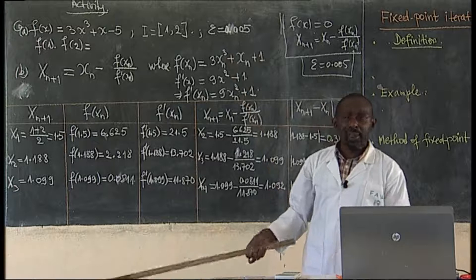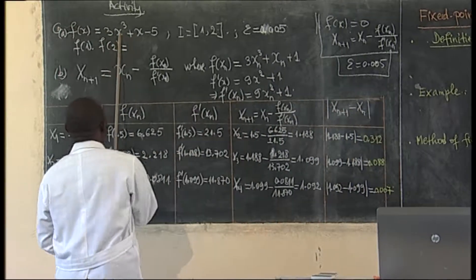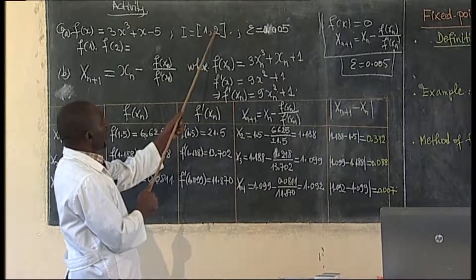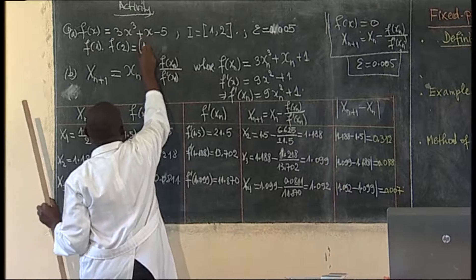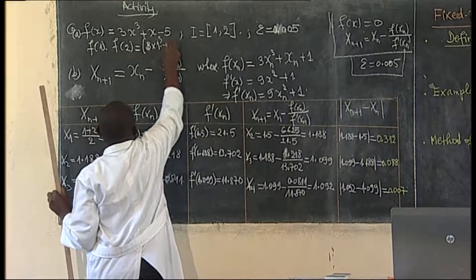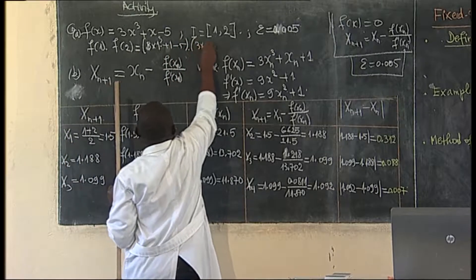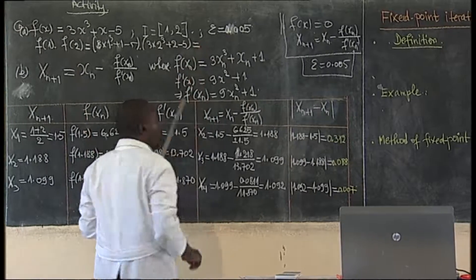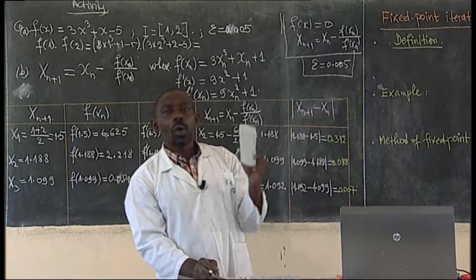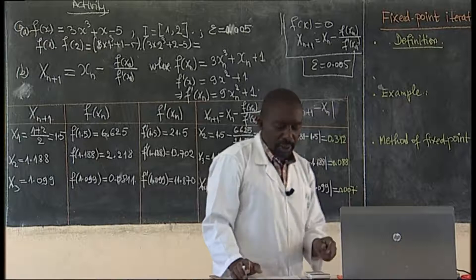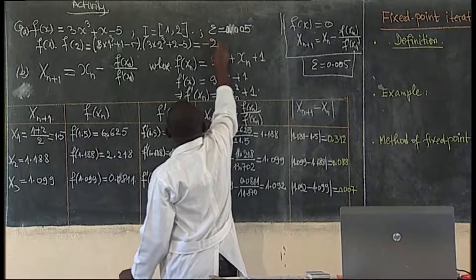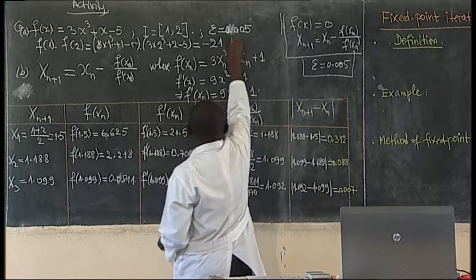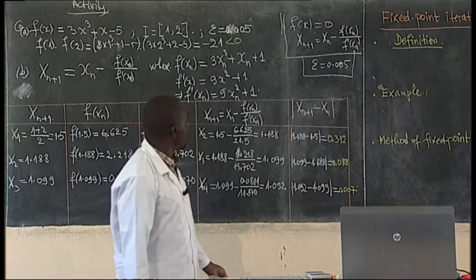First of all, we have to locate the root. Our function is 3x³ + x - 5, and the interval is [1, 2]. So we have to calculate f(1) and f(2). The product — we calculate 3 × 1³ + 1 - 5 times 3 × 2³ + 2 - 5. With your calculation, you'll be having minus 21. And as this product is negative, by change of sign, there is a root. So it means there is a root between 1 and 2.